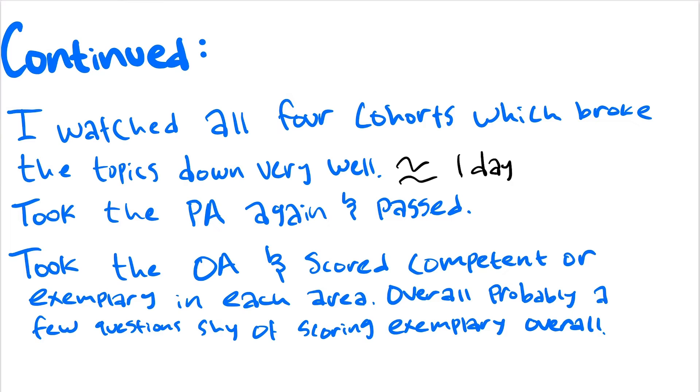After I passed, there were still some areas that I felt like I needed to work on, so I watched some cohort videos again and then just did all the practice questions that were presented in the videos. And yesterday I took the OA and scored either competent or exemplary in each area. Overall I think I was just a few questions shy of scoring exemplary, which isn't a big deal, but I felt like I maybe could have done a tiny bit better.